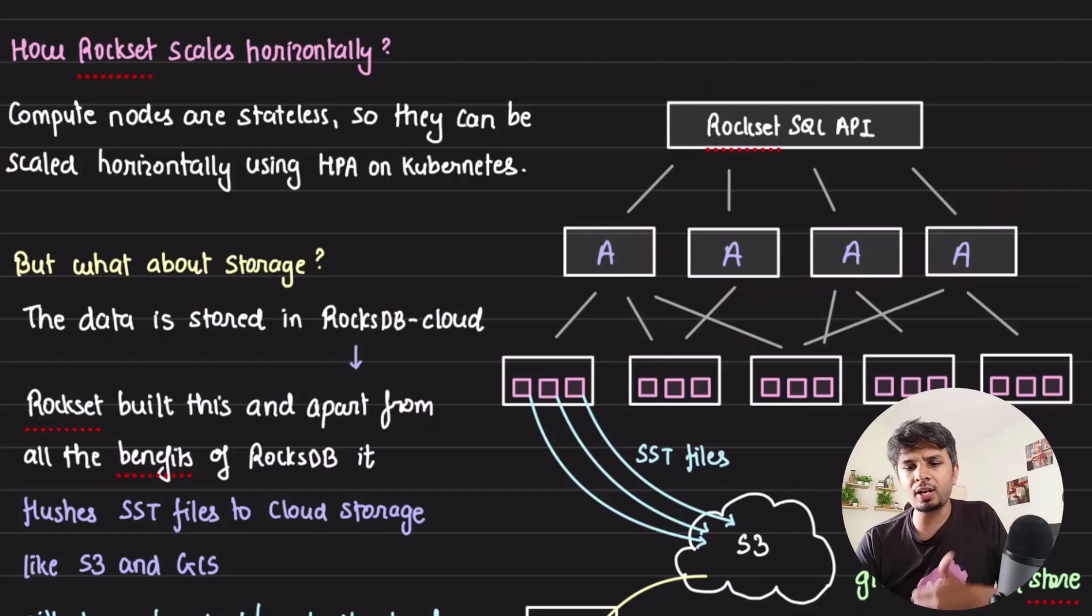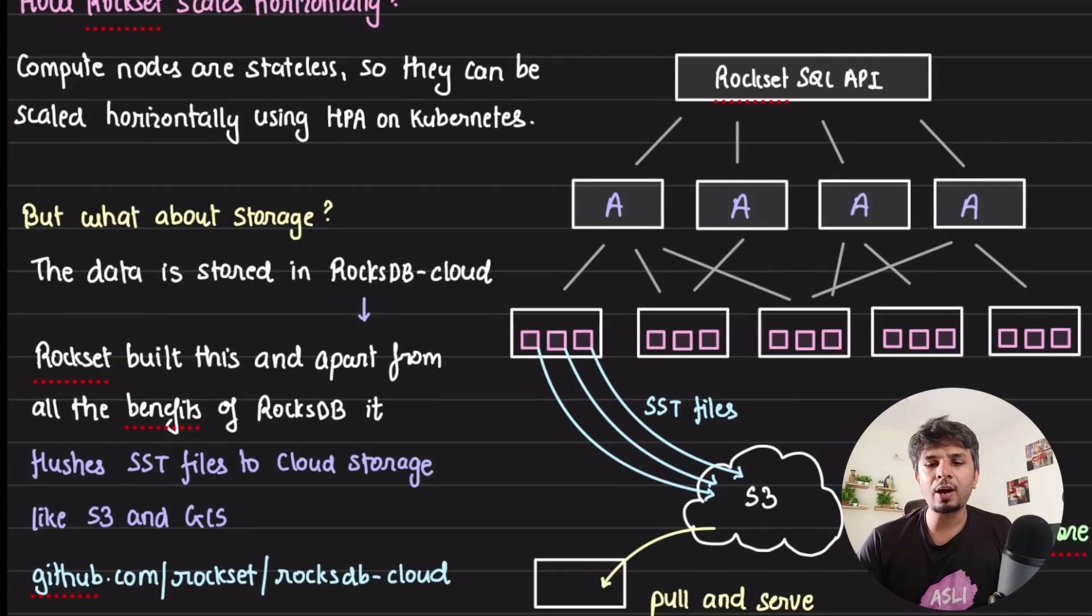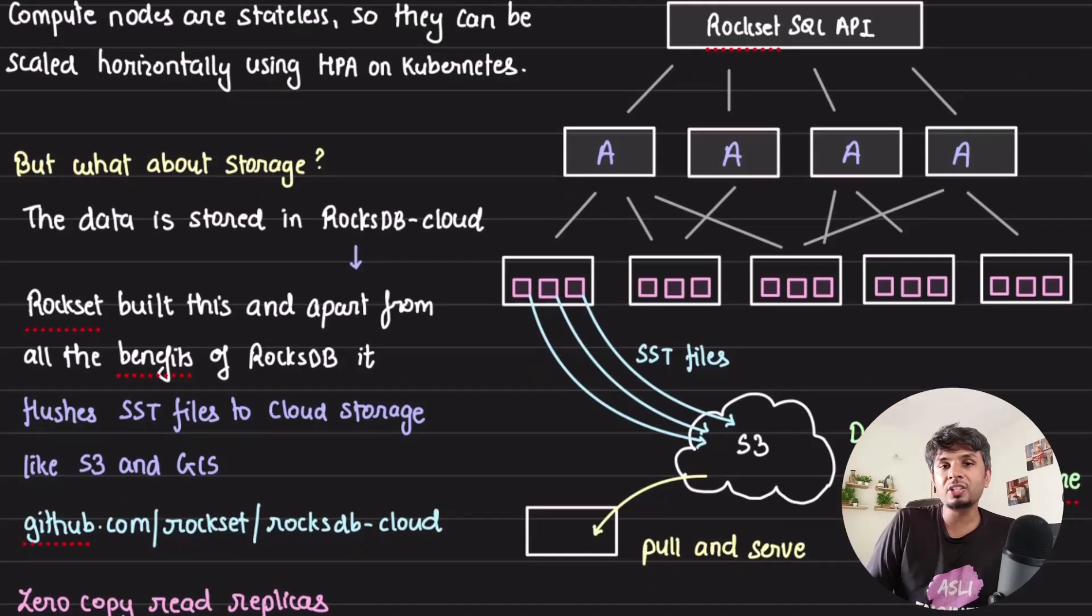The key thing is that this is completely stateless, so I can scale this with normal auto-scaling policies. They are on Kubernetes so they use HPA - horizontal pod autoscaler - to scale these things horizontally. But what about storage? How do you scale storage?